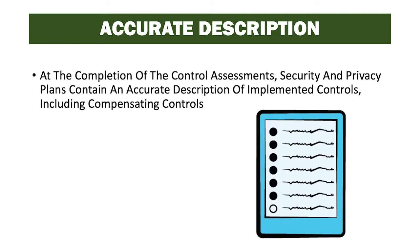At the completion of the control assessment, the security and privacy plans contain an accurate description of the implemented controls, including compensating controls. That's why we update that plan — it should show the most current view of the system. The security plan, the privacy plan, and the assessment report are all what we call living documents. They're continually updated with information as it is discovered and as it is updated.